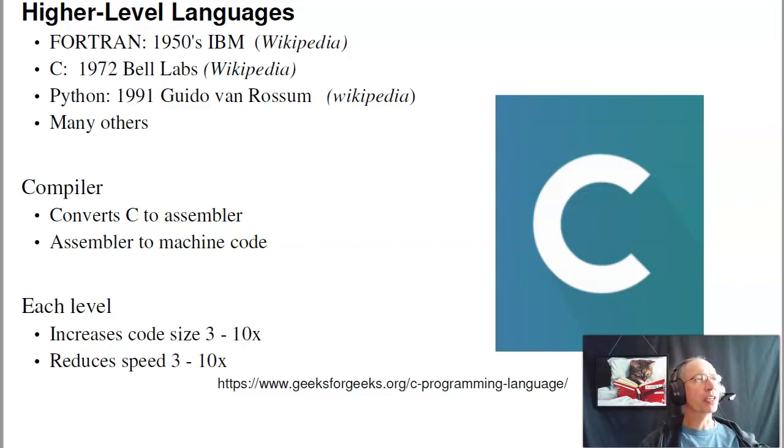Fortran was invented in the 1950s by IBM, C was invented in 1972 in Bell Labs, Python in 1991, and there's hundreds of other languages. Anytime you have a higher level language, what happens is you have to compile, then download. What the compiler does, it converts the code into Assembler, then Assembler into machine code.